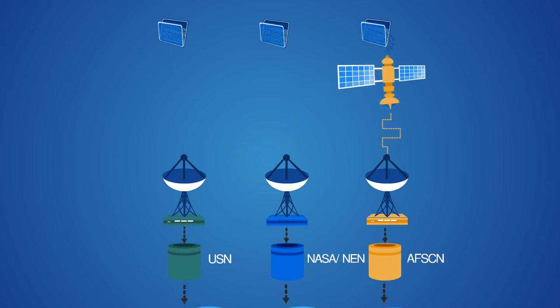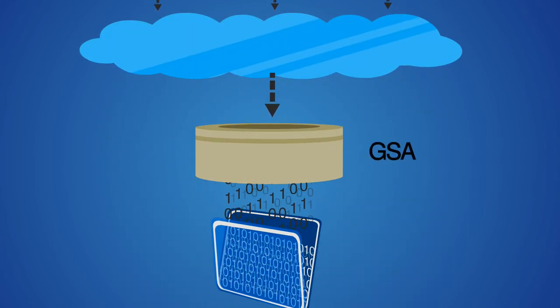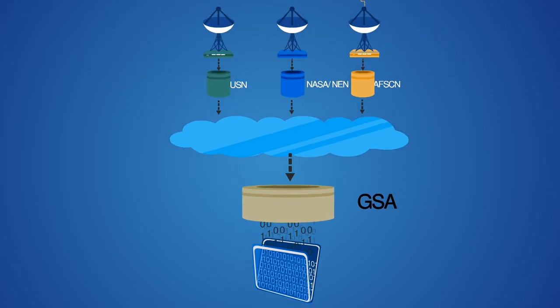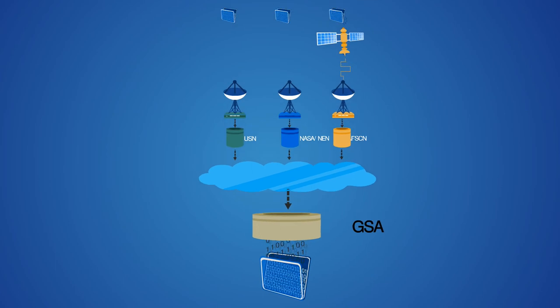Universal Space Network, NASA NEN, and AFSCN. Once received on the ground, the data flows over the cloud to the user. Data is multiplexed from the cloud by the ground system adapter application, where data is aggregated and presented to the satellite operator.